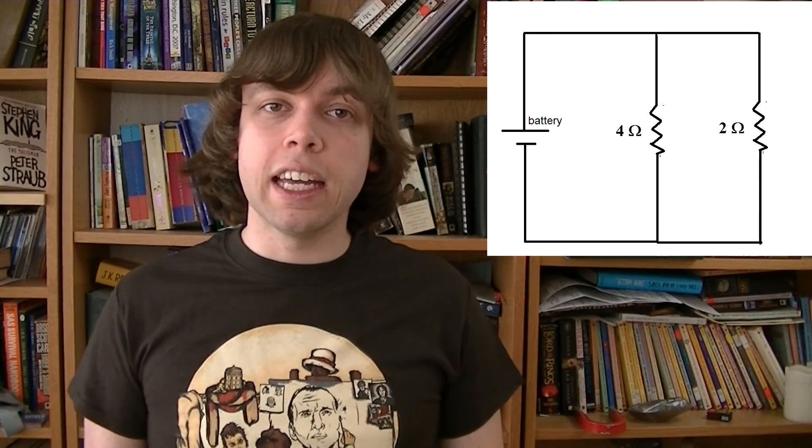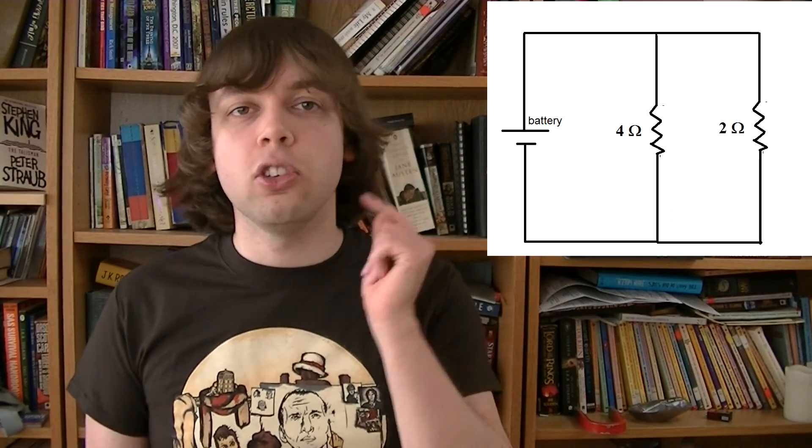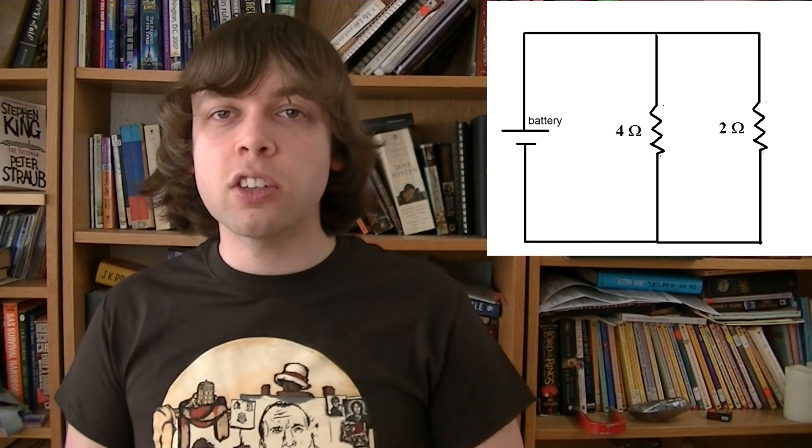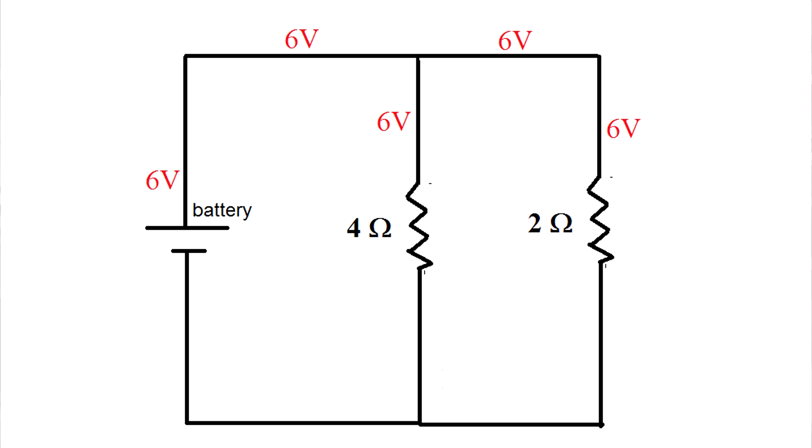In a parallel circuit, each path that you take uses up the voltage separately. So each branch of this circuit will receive the full six volts of the battery. This entire section of the circuit has a potential of six volts because none of these parts of the wire have reached a resistor yet.